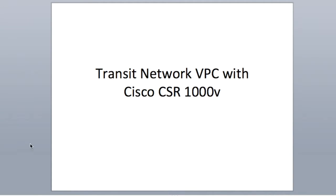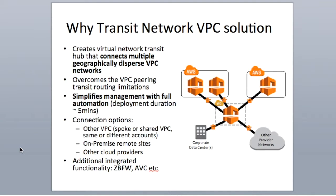As a short overview, what is Transit Network VPC and why we need it? AWS VPC provides customers the capability to create virtual networks and connect with each other using the VPC peering feature. However, the manual 1-to-1 peering could be a big operational overhead when the customer starts to grow and scale. In this scenario, customers may require a Transit hub to connect to other spoke VPCs to form a hub-and-spoke topology. And this is where our Transit VPC solution fits in.